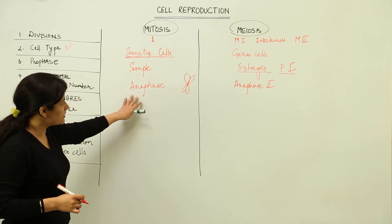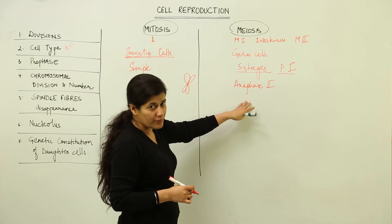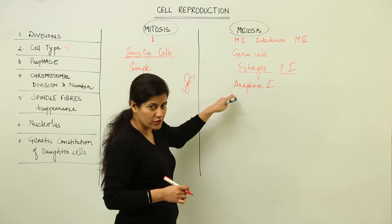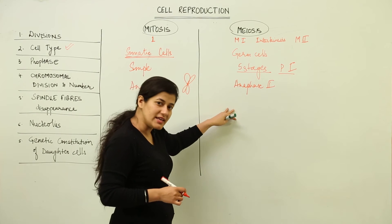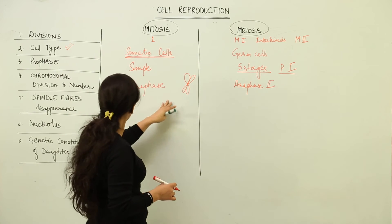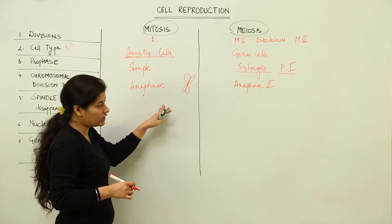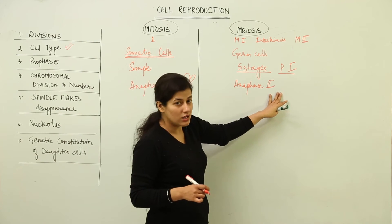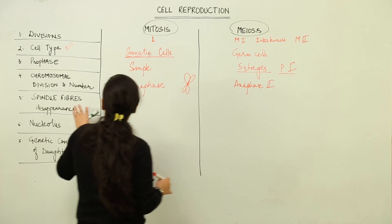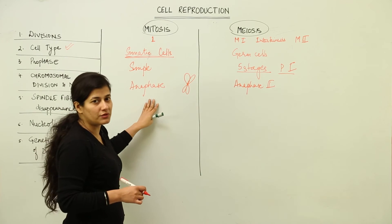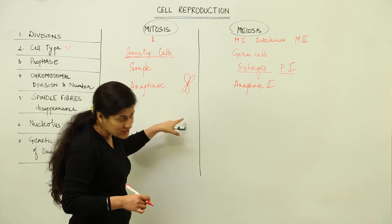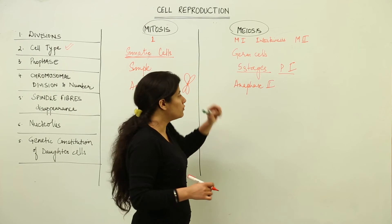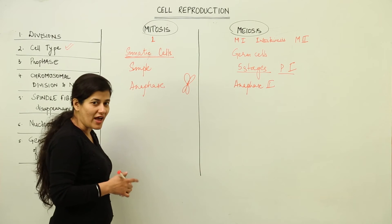When we talk about chromosome number, it remains the same during anaphase two of meiosis, because anaphase one has already reduced the chromosomal number to half when homologous pairs separate. So centromere splitting takes place in anaphase two, while the chromosome number is maintained there. In anaphase one, the chromosome number is reduced to half as the homologous pair separates.